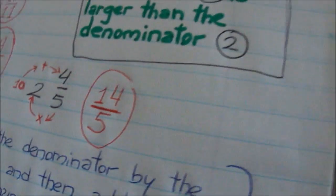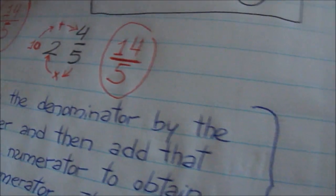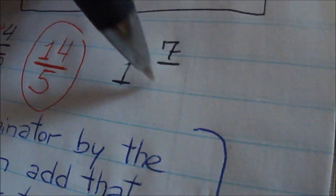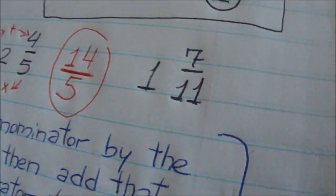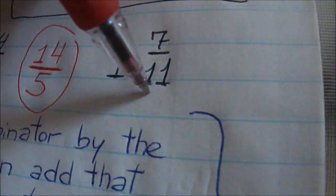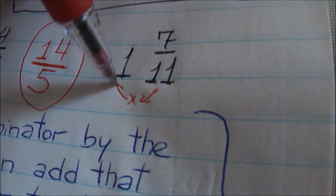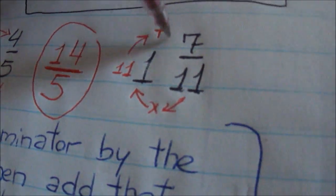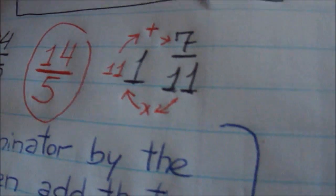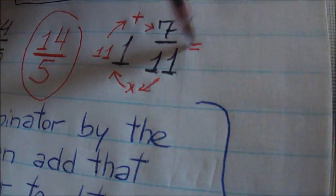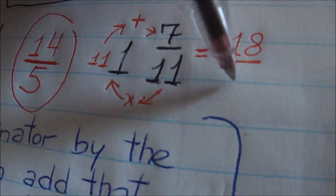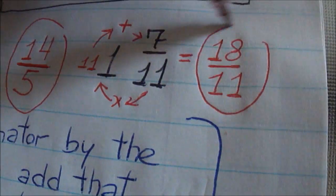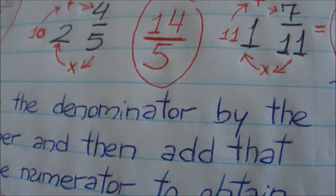Let's change this one. Let me give you another sample. 1 and 7 over 11. Let's change that. 11 multiplied by 1 is going to be 11, of course. And 11 plus 7, that would be 18. 18 over what? 18 over 11 because that denominator is going to stay the same. And that's your improper fraction.